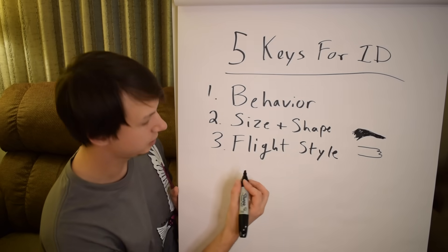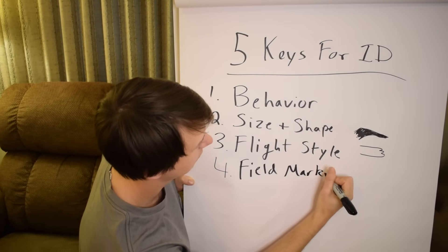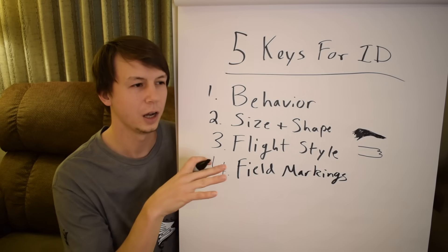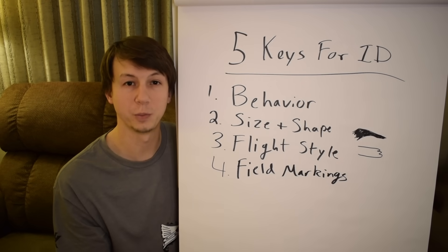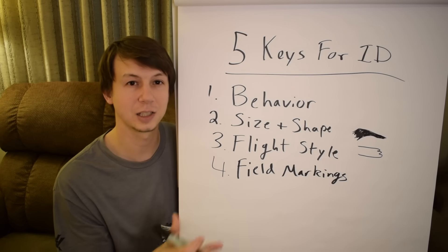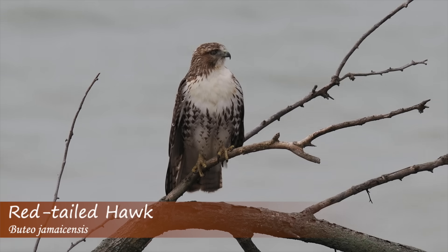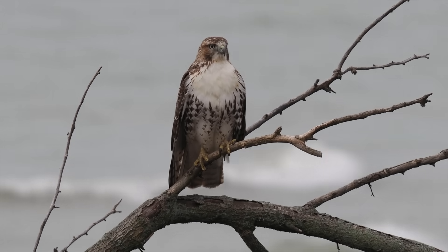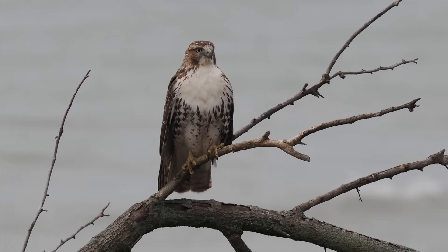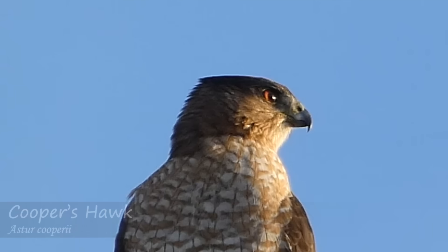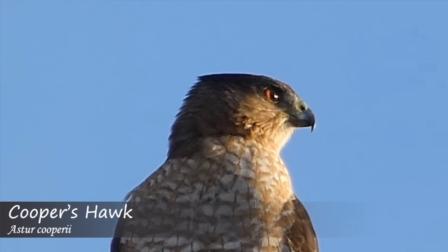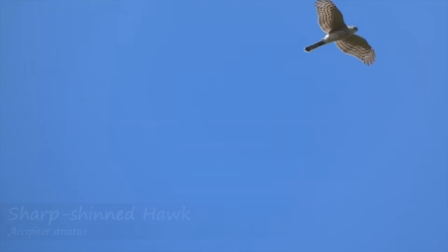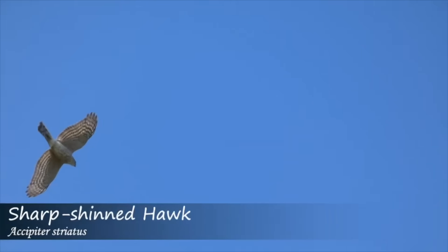Number four is field markings. Field markings are what take you from having a general idea that it's probably a buteo hawk to identifying the specific species. Look for those features we talked about earlier — like the red shoulders on the red-shouldered hawk, finding that red tail or that belly band, or the dark cap on Cooper's hawk. This is where you're really narrowing it down based on color. Having those photos really helps when taking it down to species level.